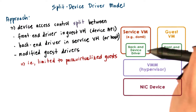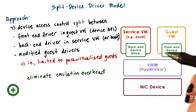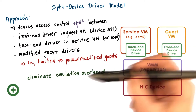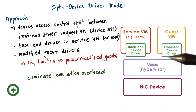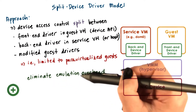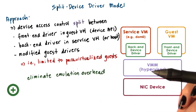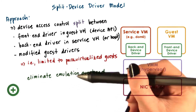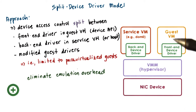Instead, it will create messages that will get passed to the service VM. One benefit of this approach is that it can eliminate the overheads associated with device emulation that the previous model required. Now we don't have to reverse engineer exactly what the guest OS is trying to do.